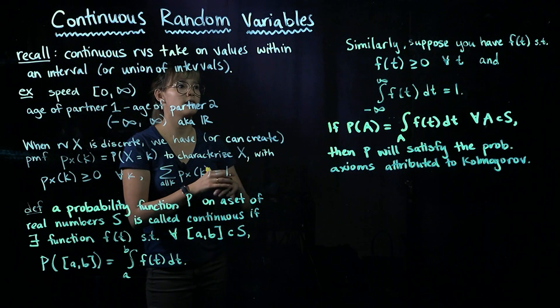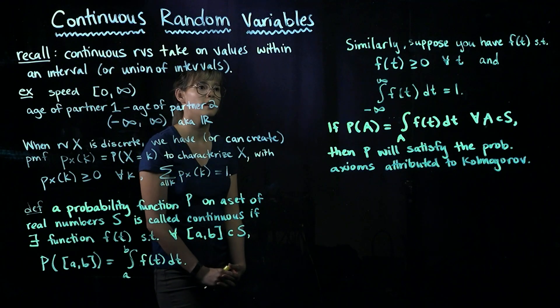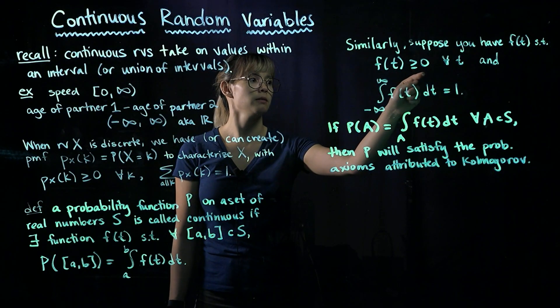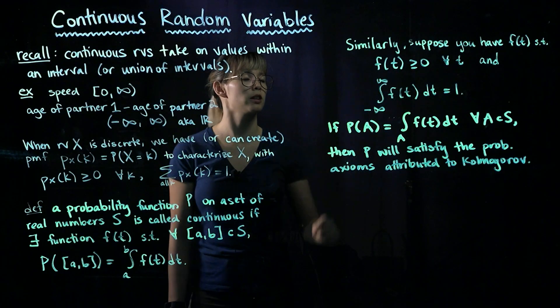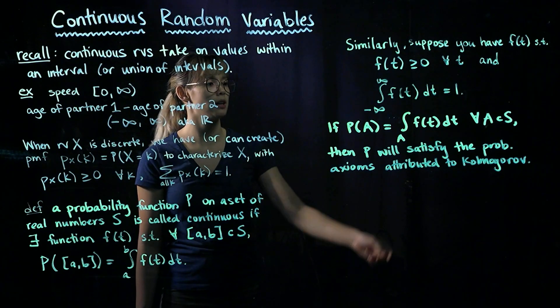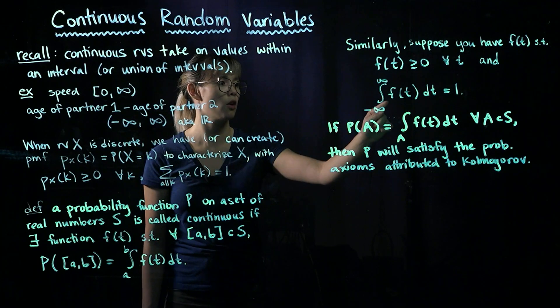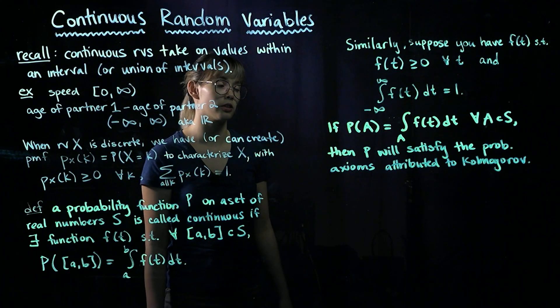A similar thing is suppose you have some function F of T, such that it's non-negative everywhere. So in other words, F of T is greater than or equal to zero for all values of T. And if we integrate from negative infinity to positive infinity over F of T, then this integral is going to be equal to one.